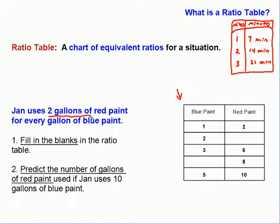Jan uses 2 gallons of red paint for every gallon of blue paint. Help me by writing that as a ratio. Over here, you'll see we've written that out as a ratio up on the top level of our chart. 1 gallon of blue paint is equivalent to 2 gallons of red paint.